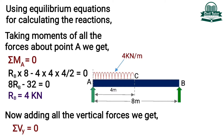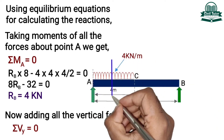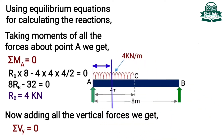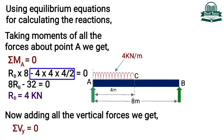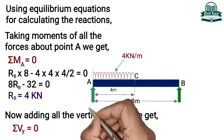It should be noted that the moment about a point due to UDL is calculated by multiplying the load intensity with the length of loading and the distance of the center of gravity of UDL from the point about which the moment is to be calculated. For illustration, due to 4 kN per meter UDL, the moment will be equal to load intensity 4 into length of loading 4 meter into distance of center of gravity of UDL from point A, which is 4 by 2. The center of gravity lies at the center of UDL, that is 4 by 2 from point A. By simplifying further we get the value of RB equal to 4 kN.